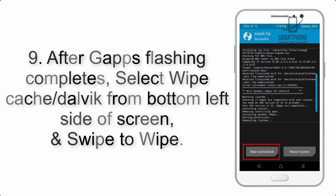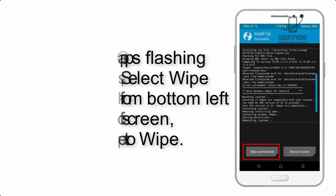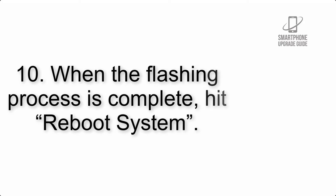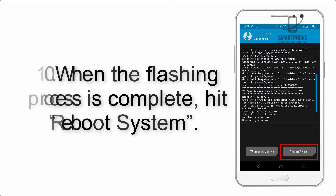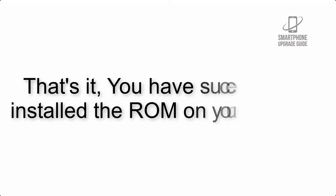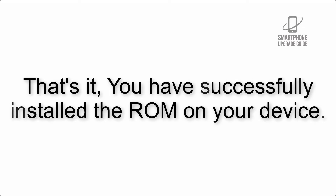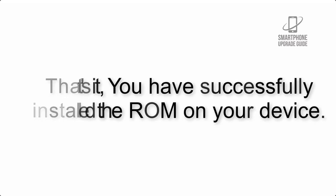Step 8: Flash the GApps zip package in the same manner. Step 9: After GApps flashing completes, select Wipe Cache and Dalvik from the bottom left side of the screen and swipe to wipe. Step 10: When the flashing process is complete, hit Reboot System. That's it — you have successfully installed the ROM on your device.